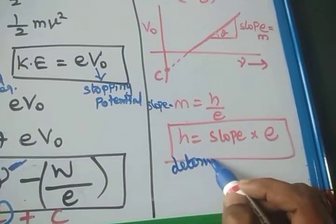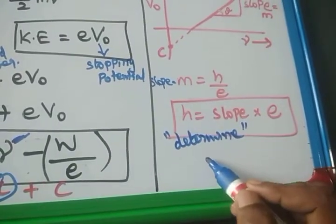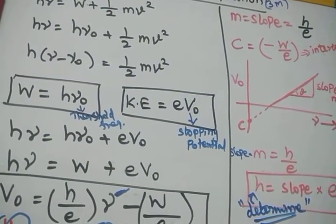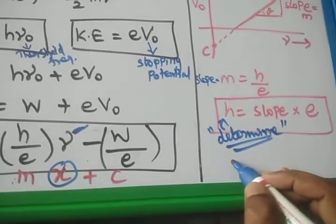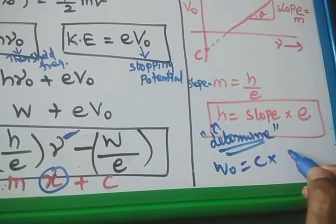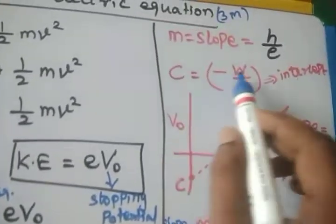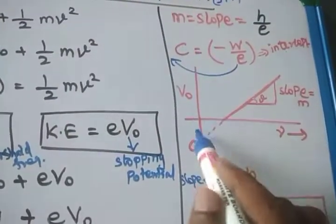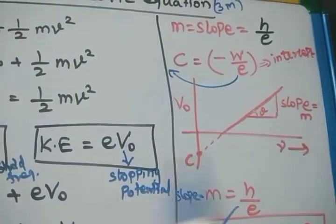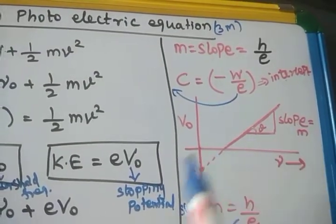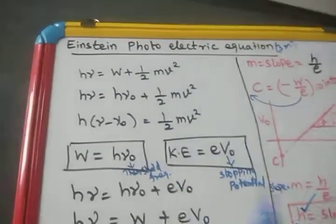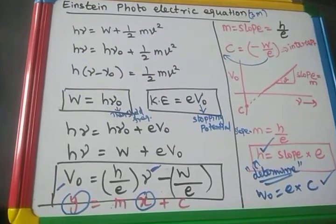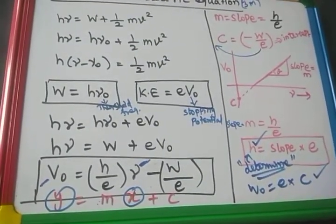By this way, we can determine Planck's constant experimentally, since H equals slope times E. The determination of Planck's constant and work function can both be done using this photoelectric equation. The work function equals E times the magnitude of the intercept, since C equals work function divided by E. So by plotting the graph between stopping potential and the incident frequency of radiation, we can calculate both the work function and Planck's constant.